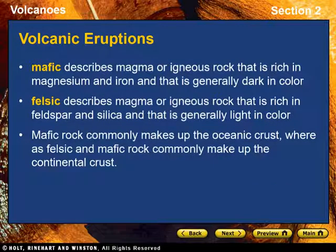Chapter 13, Section 2: Volcanic Eruptions. Volcanoes can be thought of as windows into Earth's interior. Lava that erupts from them provides an opportunity for scientists to study the nature of Earth's crust and mantle. By analyzing the composition of volcanic rocks, geologists have concluded that there are two general types of magma.